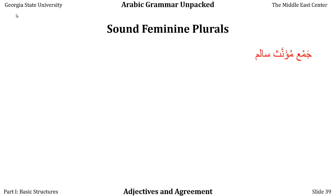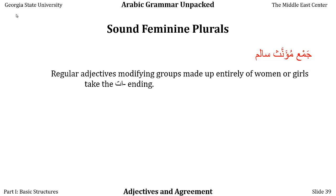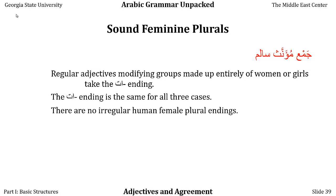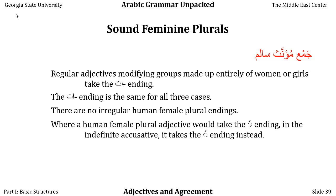Let's take a look at sound feminine plurals — jama' mu'annath salim: jama' is plural, mu'annath is feminine, salim is safe or sound. Regular adjectives modifying groups made up entirely of human women or girls take the -at ending. The -at ending is the same for all three cases. There are no irregular human female plural endings. Where a human female plural adjective would take tanwin fath in the indefinite accusative case, it takes tanwin damm instead.